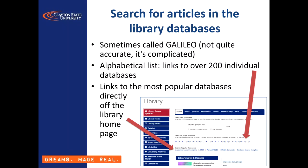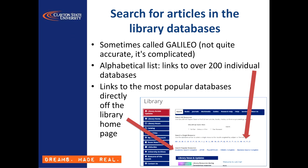The tools you'll use to search for articles are the library databases. You'll often hear your professors tell you to search Galileo for articles, but that's not entirely accurate, as Galileo is really a large collection of individual databases, and we also have access to some other databases that are not part of Galileo. Kind of like how you don't really watch Cox Cable — you watch individual channels you subscribe to as part of your cable package, and maybe pick up a few broadcast channels as well. The CSU library gives you access to over 200 different databases, which you can reach via the alphabetical list on the library homepage, but we also have direct links to five of the most useful and popular databases in their own section. I'll be going into detail about how to search the databases for articles in the next video in this series.